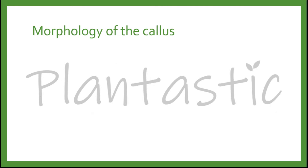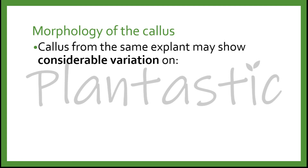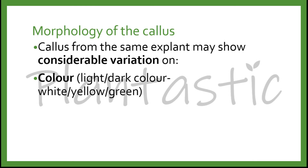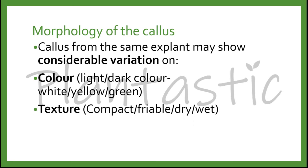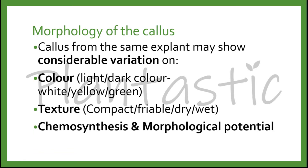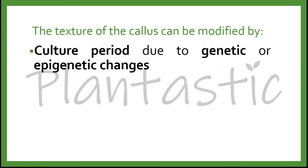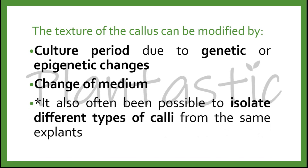The morphology of callous varies from plant to plant, explant to explant, species to species, and condition to condition. Callous from the same explant may show considerable variation in color, from white, yellow, to green. The texture of callous can also differ, being compact, friable, dry, or wet. Biosynthetic and morphological potential will be different as well. The texture of callous can be modified by the culture period due to genetic or epigenetic changes, or change of the medium. It has also often been possible to isolate different types of calli from the same explant.